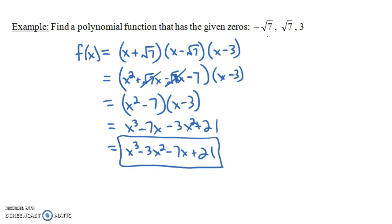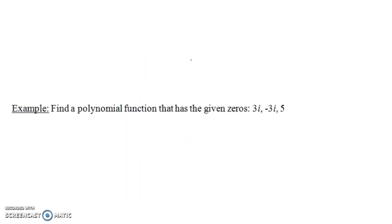You could check this by plugging the zeros in. Plugging in something like √7 would be a bit messy, but 3 isn't hard. Plugging in 3: we get 27 - 27 - 21 + 21 = 0. You could do the same with ±√7, though it's a little messier.